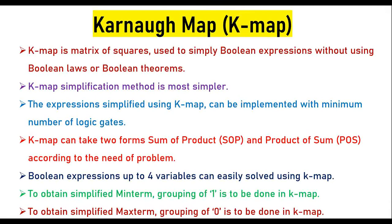In this video we will study about Karnaugh map or KMAP. KMAP is a very important tool for simplification of Boolean expressions. KMAP is a matrix of squares used to simplify Boolean expressions without using Boolean laws or Boolean theorems. That is one of the most important advantages of KMAP, because we do not need to remember Boolean laws and theorems. With the help of KMAP, any Boolean expression can be simplified in an easy way.